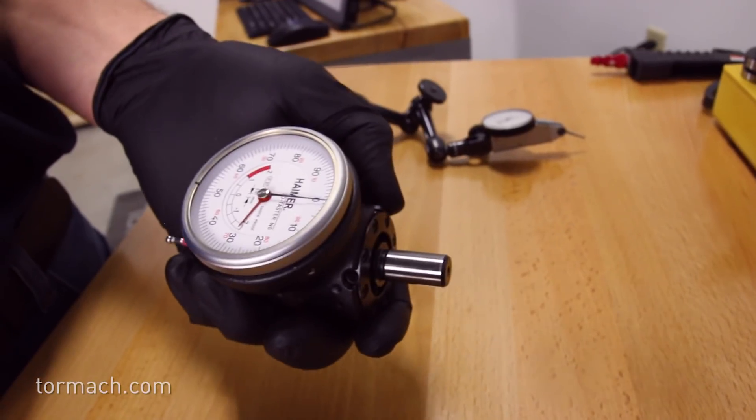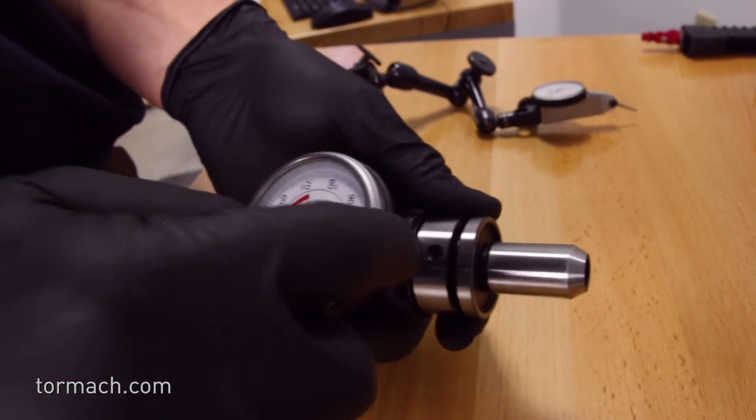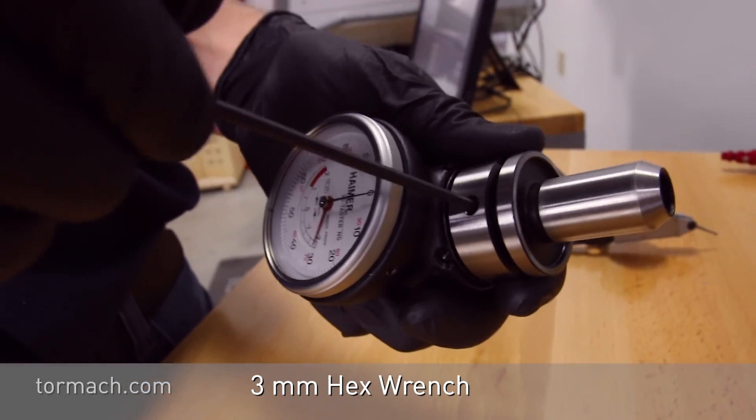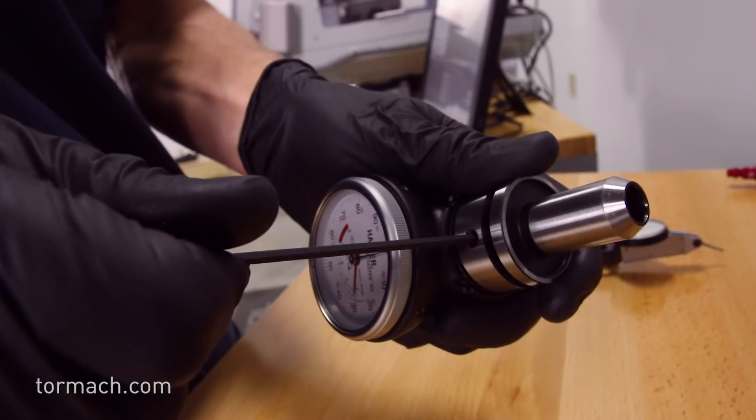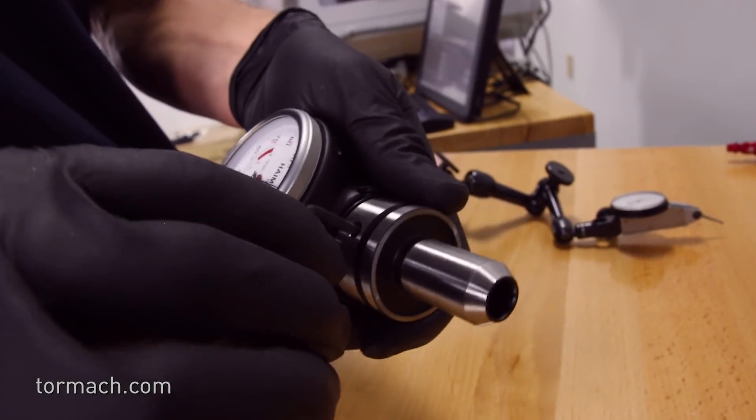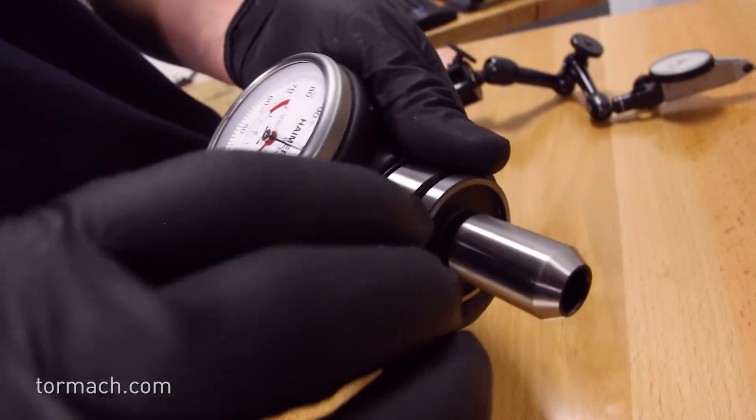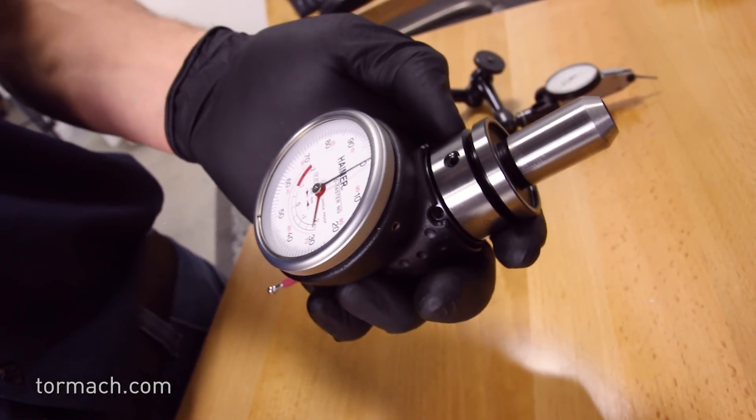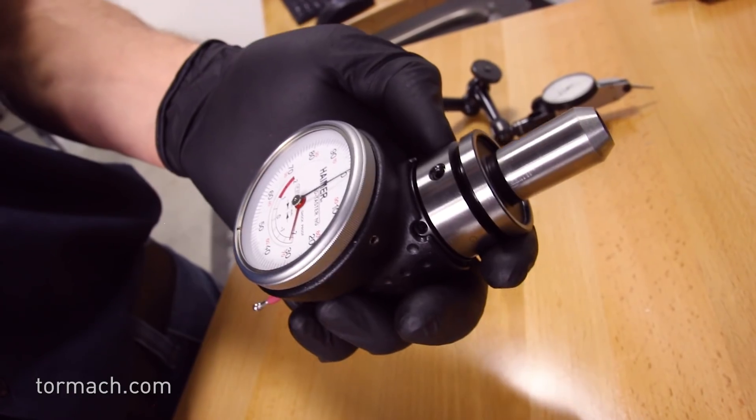So let's get this thing assembled. There's just a single set screw on the TTS holder itself. Take a three millimeter Allen wrench here and we'll just lightly snug this up. We don't need to go crazy tight on this, just enough to keep it from falling out. Then from here we can go ahead and load it up into one of our machines and start to indicate it in.